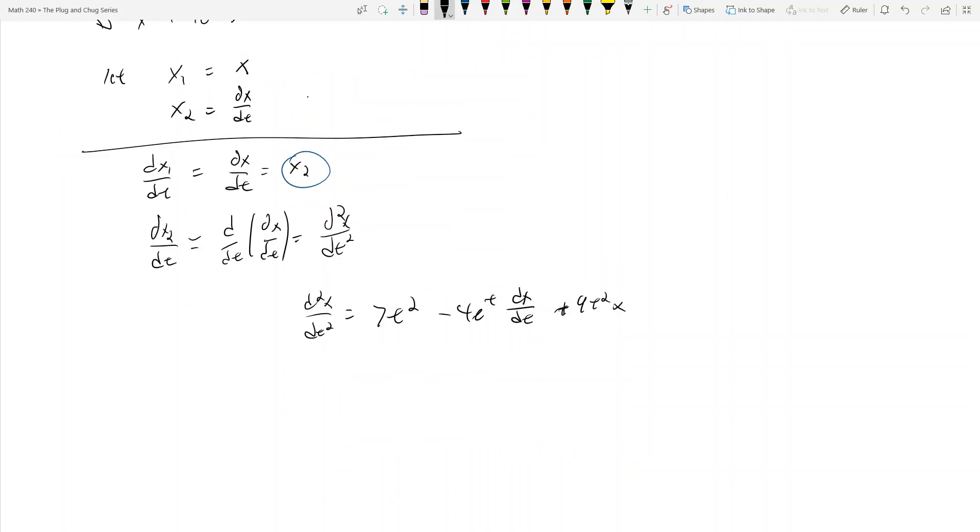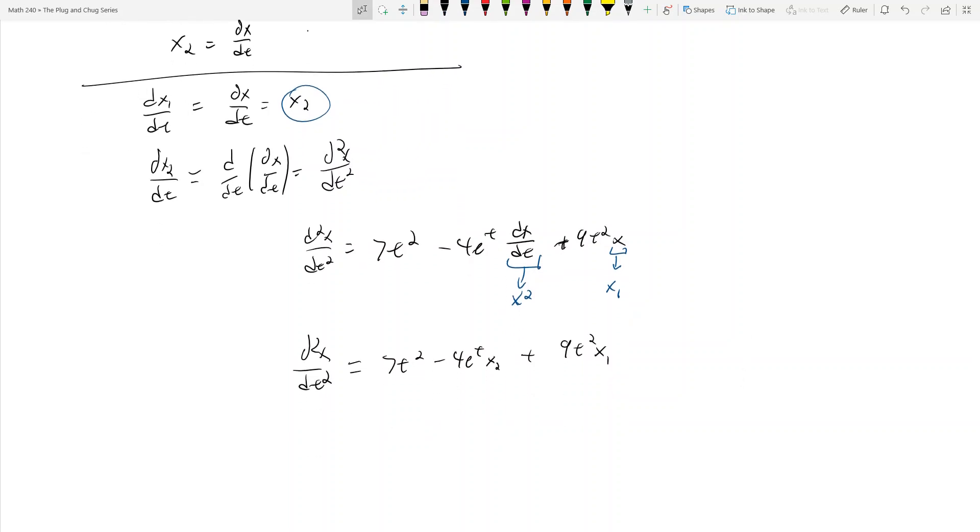Now what? Now we replace anything here that has possible x1's and x2's. Well here we see that dx dt is x2, and x is x1 because we let x1 equal x up top. So now I can write dx2 dt equals 7t squared minus 4e to the t x2 plus 9t squared x1.